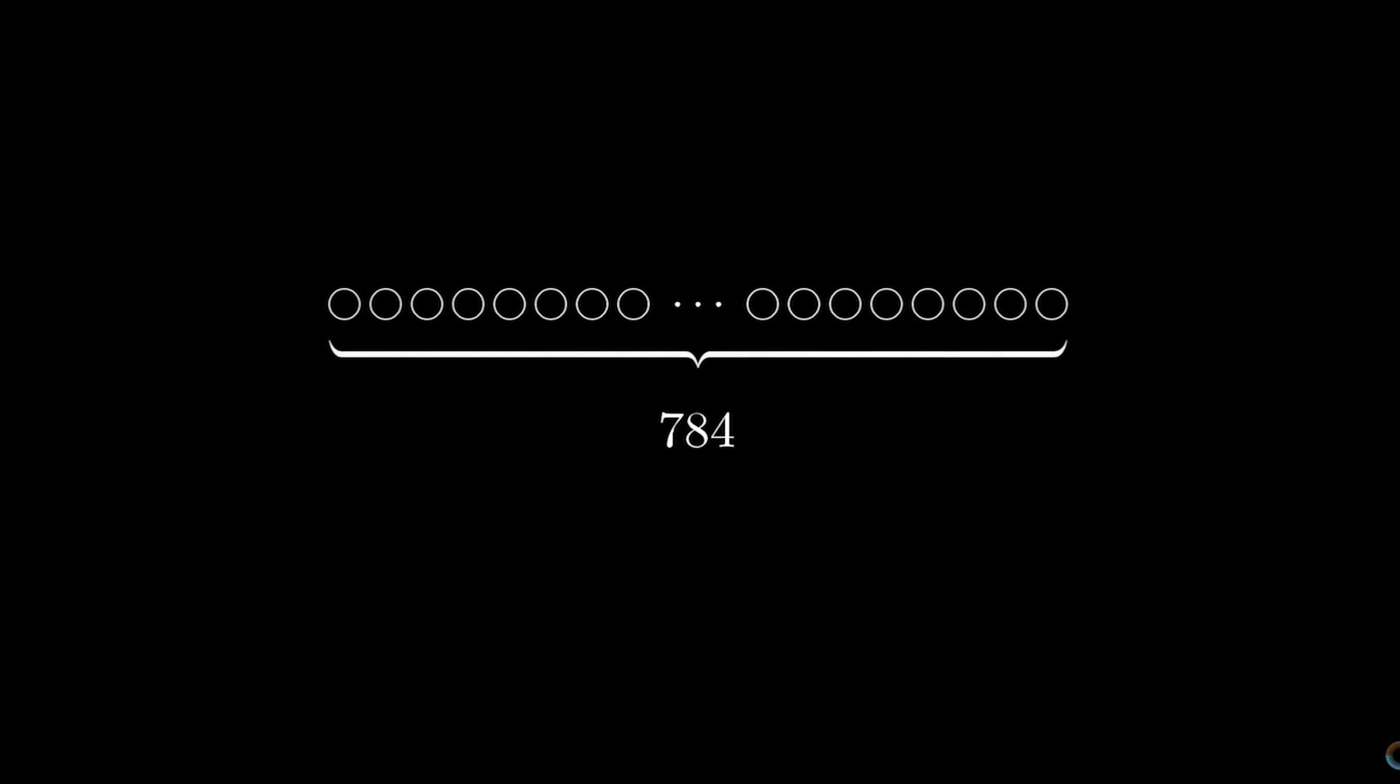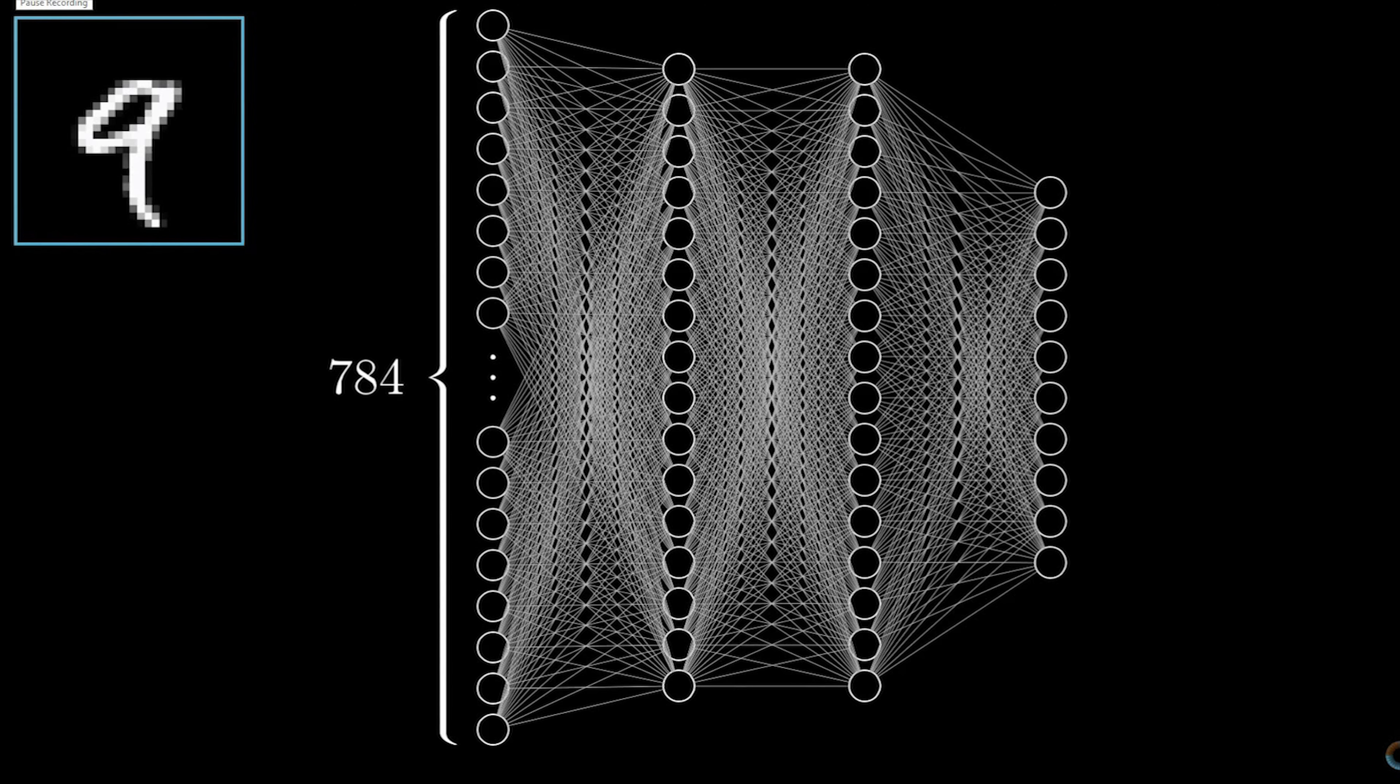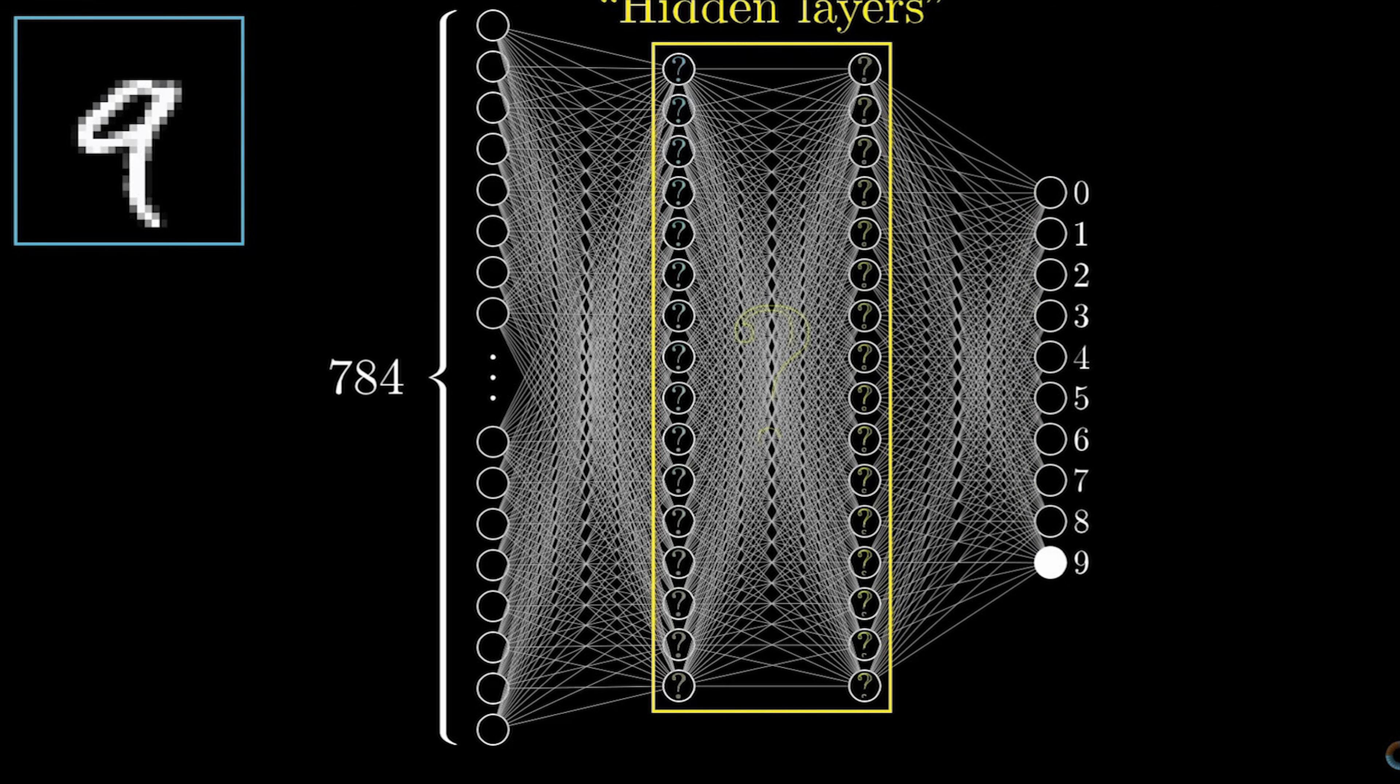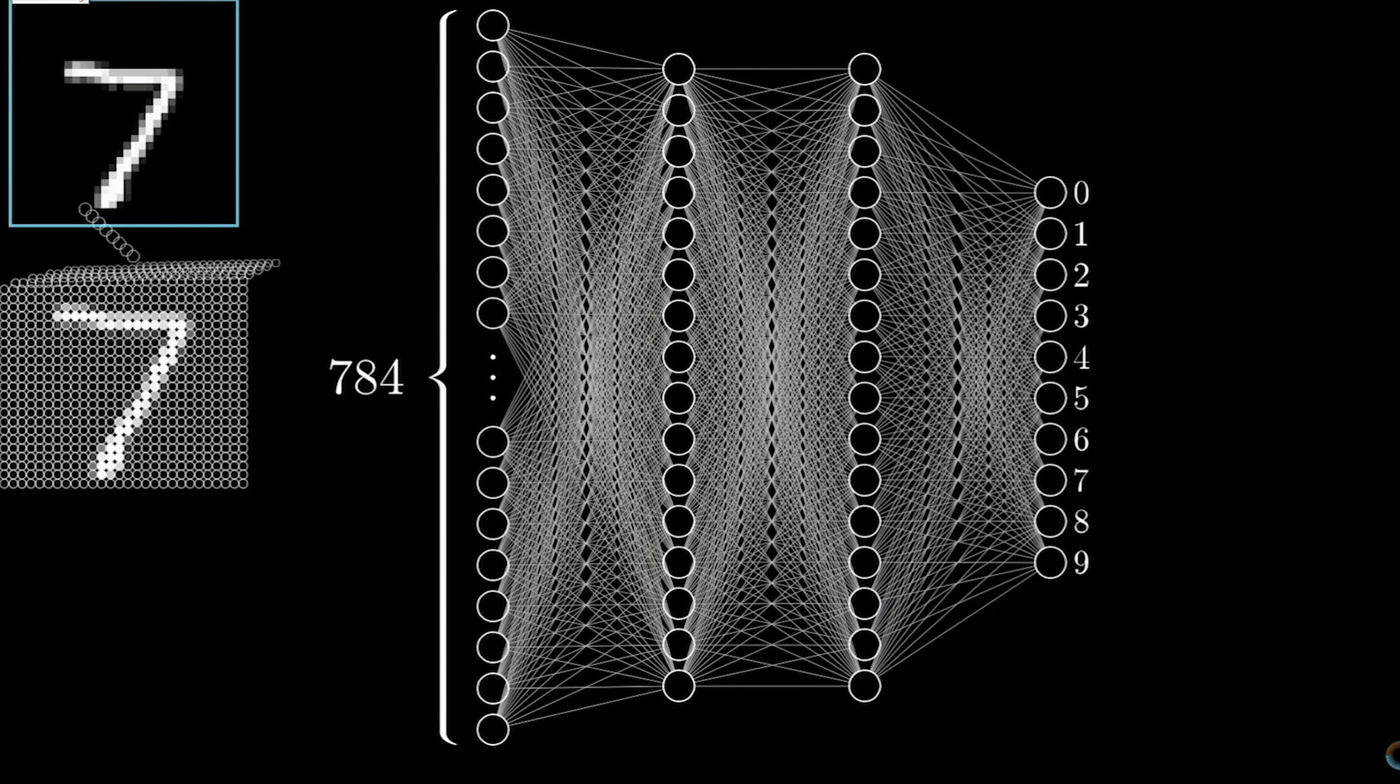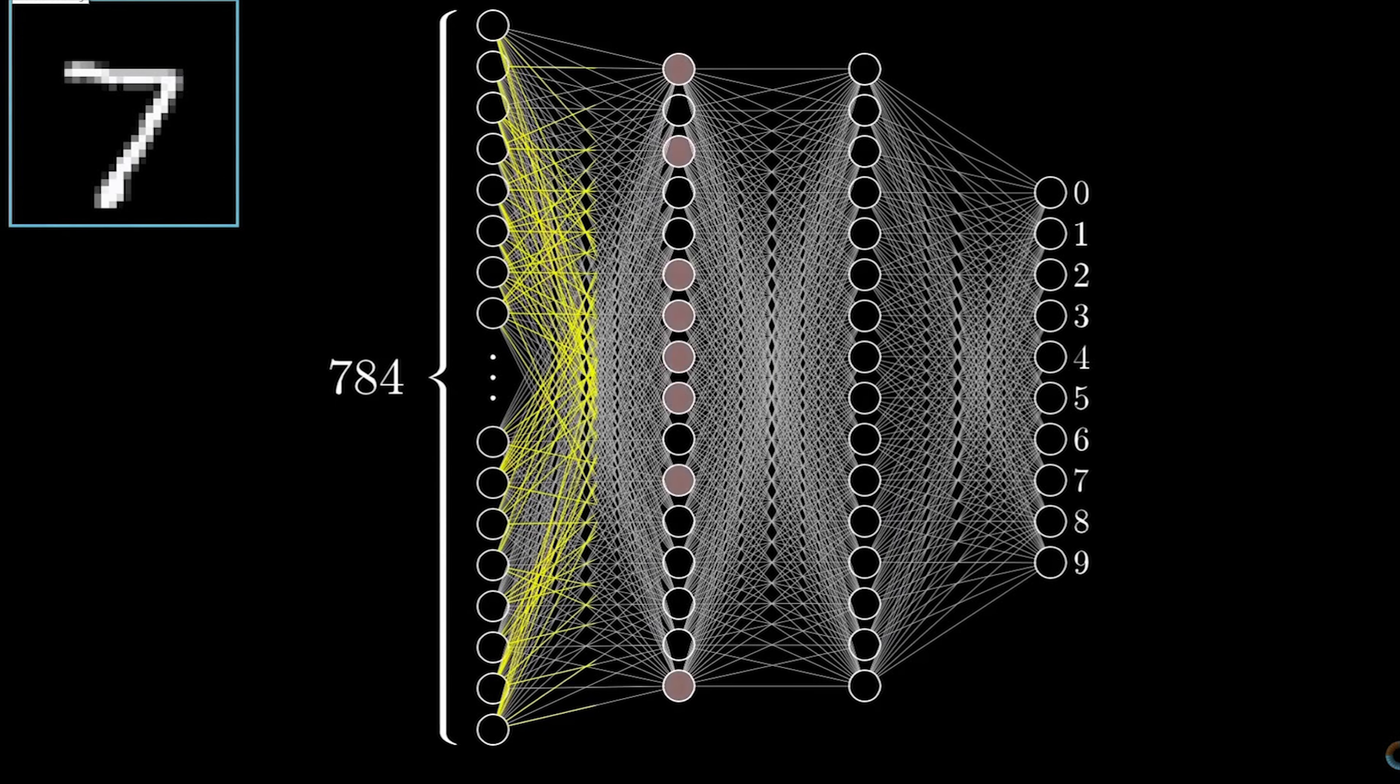The connections of the biological neuron are modeled in artificial neural networks as weights between nodes. A positive weight reflects an excitatory connection, while negative values mean inhibitory connections.